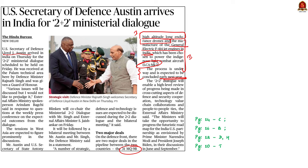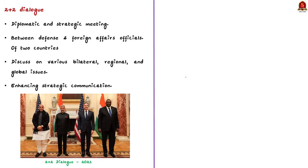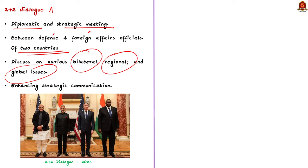In this context, let us see about the 2+2 dialogue and various defense agreements between India and US. The 2+2 dialogue refers to a diplomatic and strategic meeting held between the top defense and foreign officials of two countries. In this dialogue format, the defense minister and foreign minister of one country meet with their counterparts of another country. They discuss and coordinate on various bilateral, regional and global issues. The name '2+2' signifies the two key areas involved — foreign affairs and defense affairs — allowing comprehensive discussion on security, defense cooperation, and diplomatic matters, thereby enhancing strategic communication between the two nations.